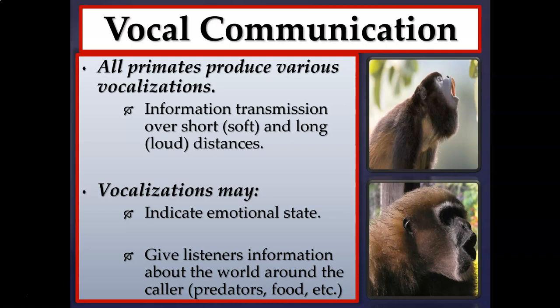If a primate vocalizes to alert the entire group to a predator, that's altruistic — that individual is potentially putting themselves in danger by calling attention. For example, among vervet monkeys, an alarm call for an aerial predator like a hawk or eagle signals all primates to move down in the canopy, while a call for a terrestrial predator like a leopard signals everyone to move up into the canopy to avoid it.